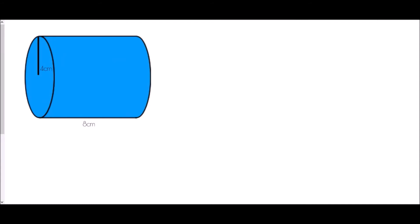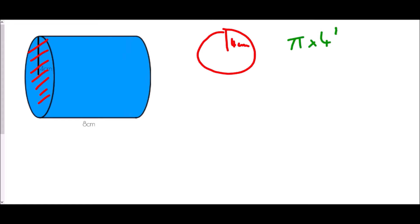Next we have a cylinder. Now cylinders technically are not prisms — a prism technically should have a polygon as its cross section, and a polygon only has straight sides. So a cylinder technically isn't a prism, but it does follow the same rule. We still need the area of the cross section multiplied by its length. In this case the cross section is a circle with a radius of 4 centimetres. So if I want to find the area of that circle, I need to use the formula for the area of a circle, which is pi times radius squared: pi times 4 squared.